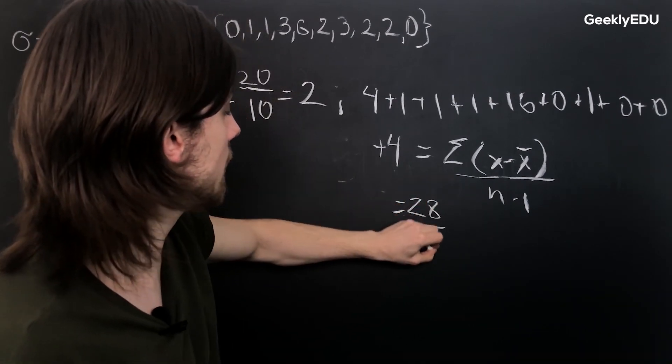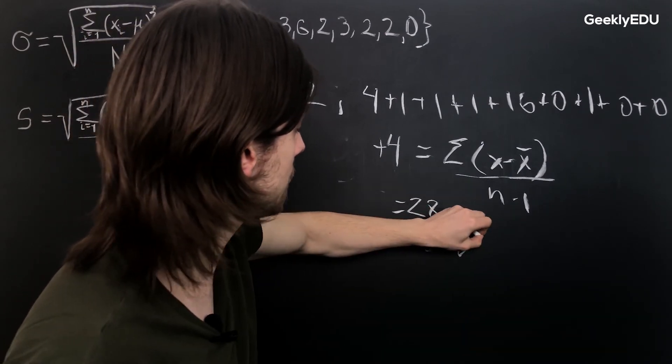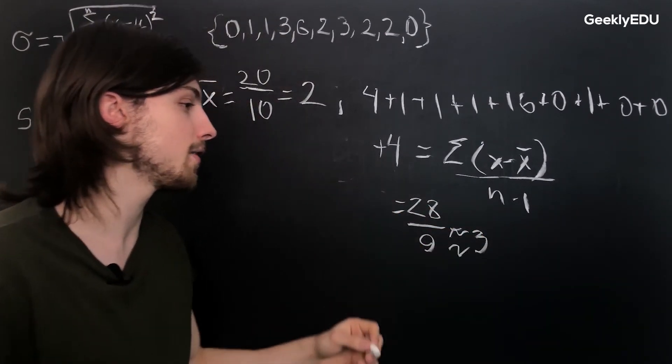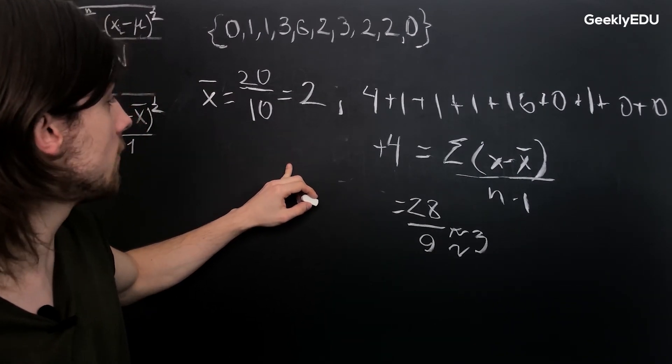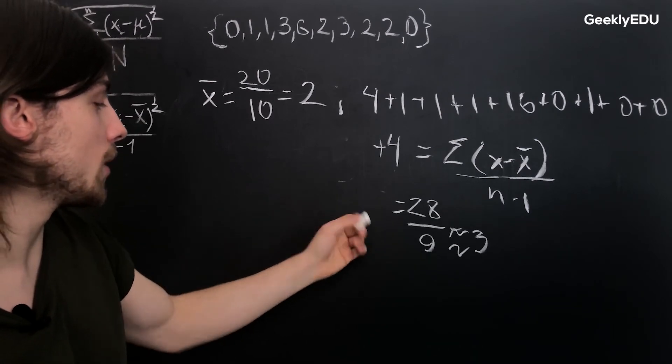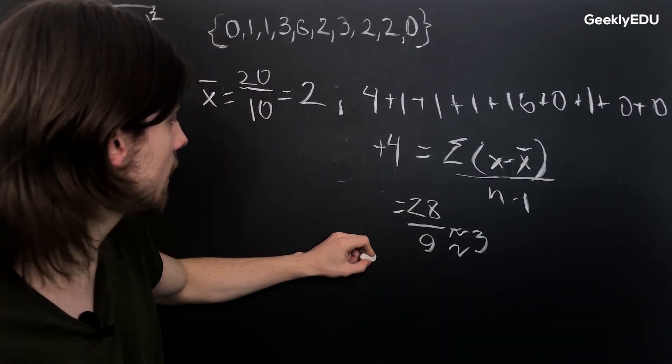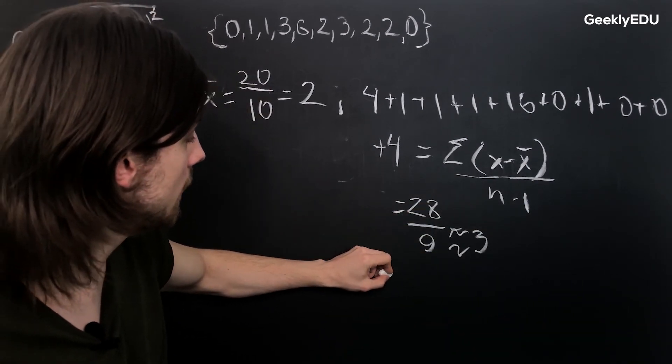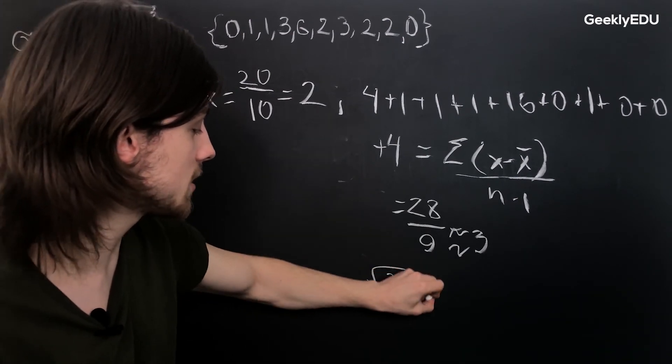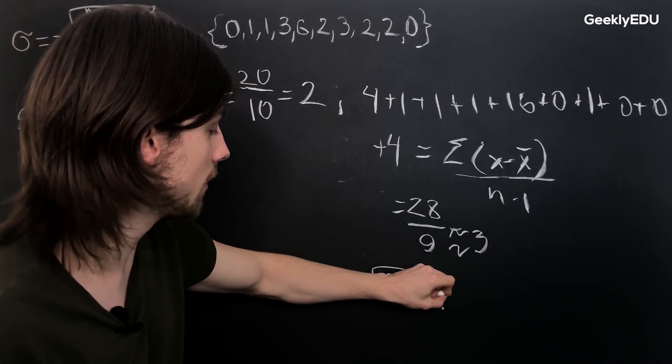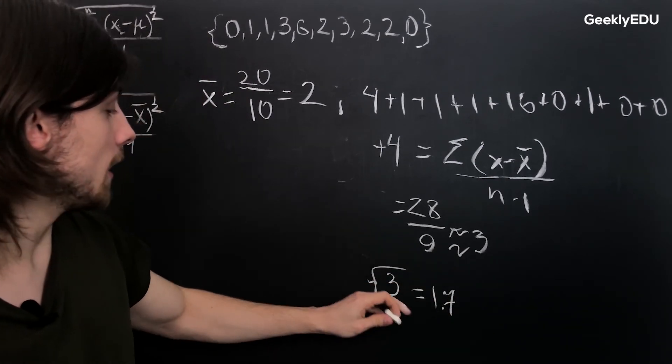And 28 divided by 9 is approximately 3, since 3 times 9 would be 27, so pretty close. Alright, so we have our variance and now we calculate the standard deviation. For that we need to take our 3 and just draw a square root, which should give us something around 1.7 I believe. Alright, and this is your standard deviation.